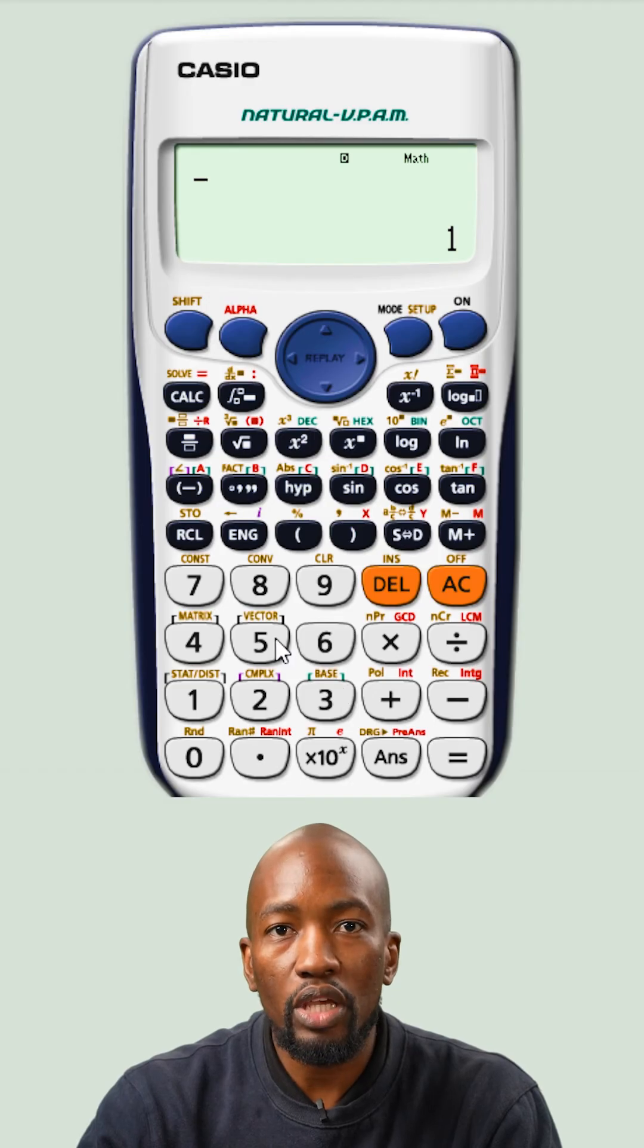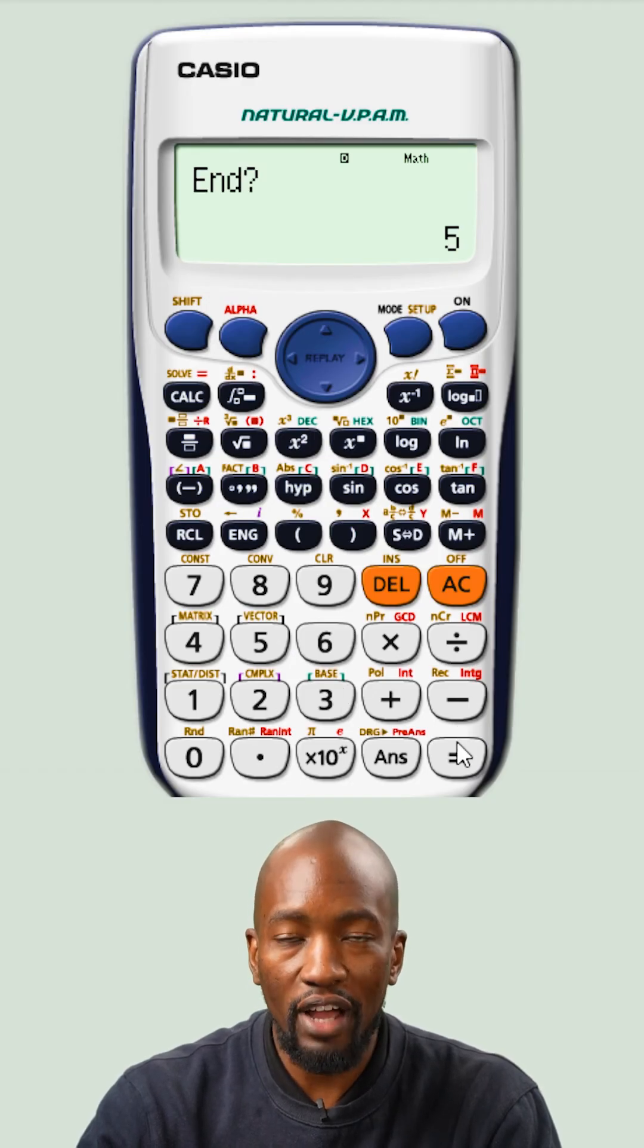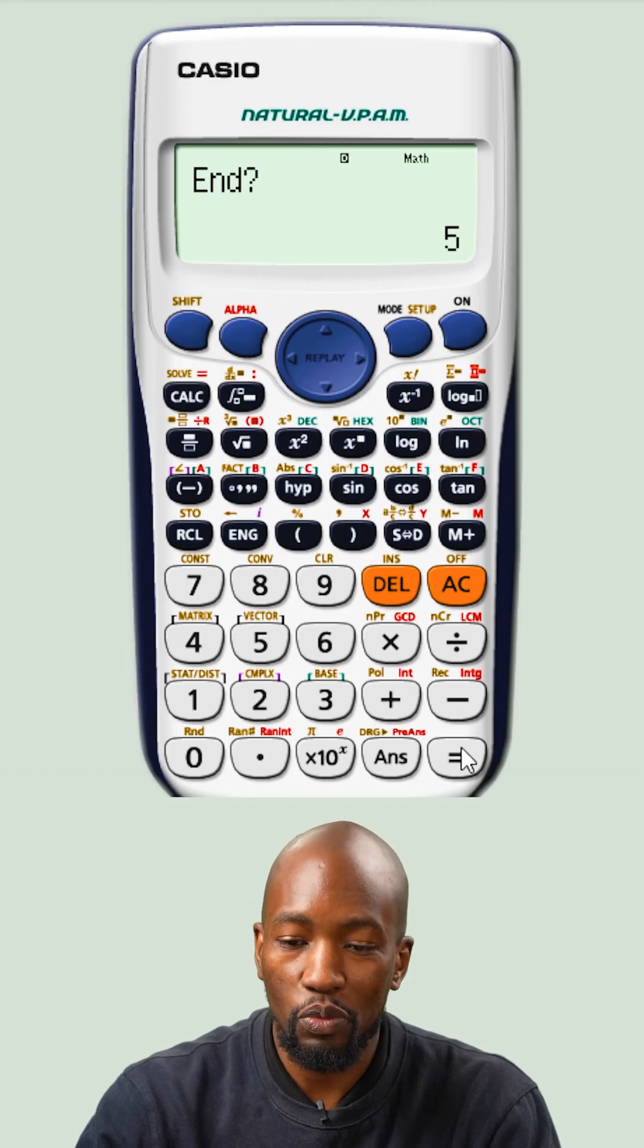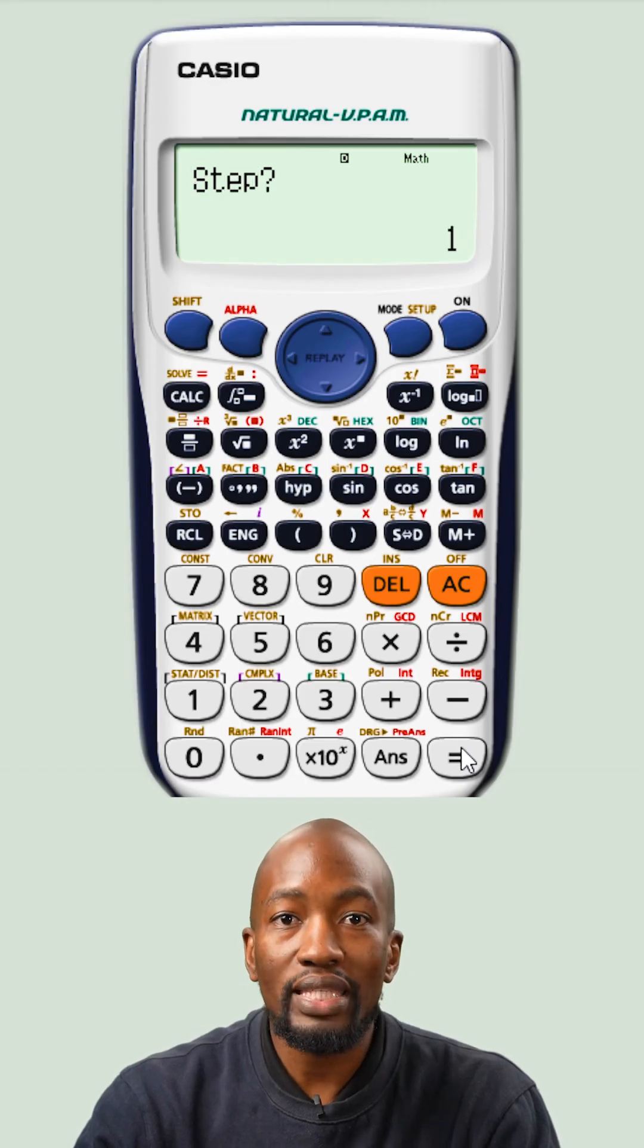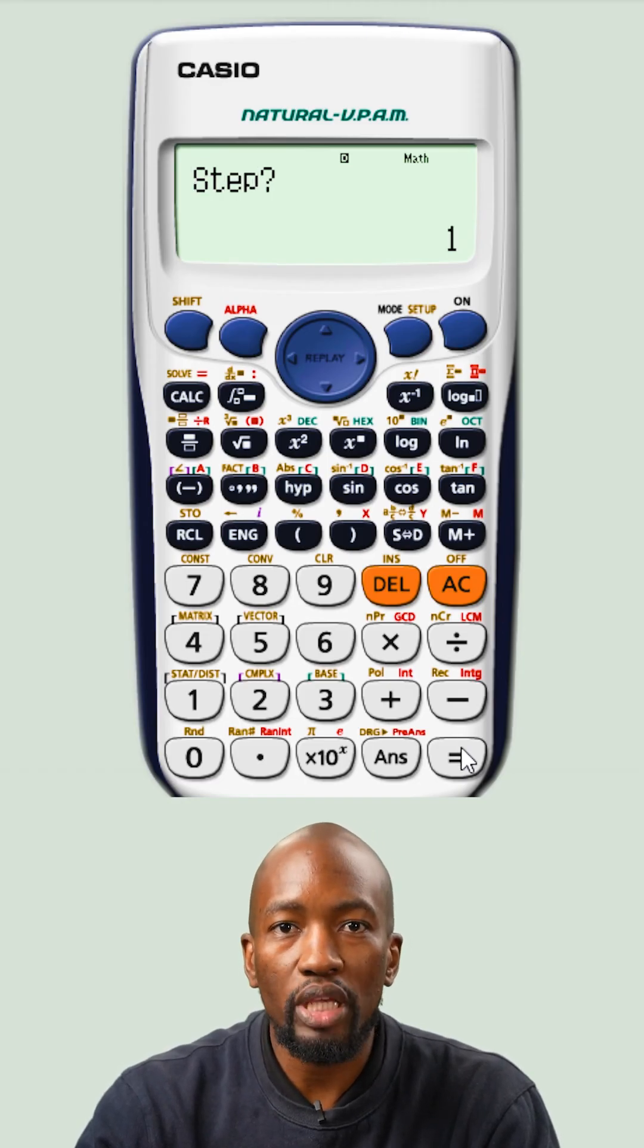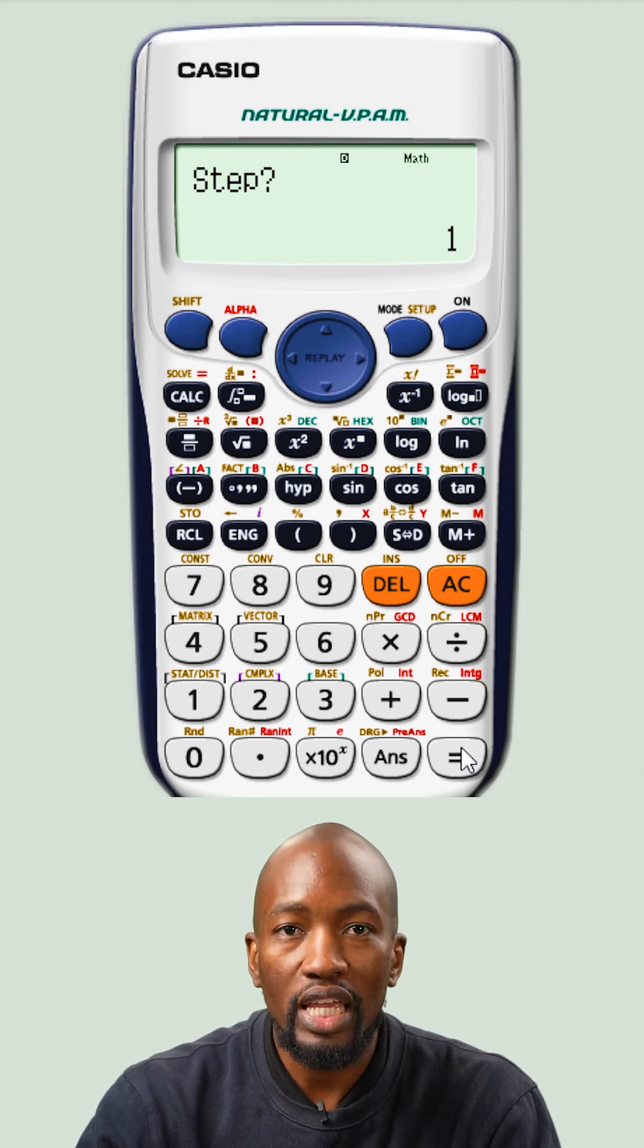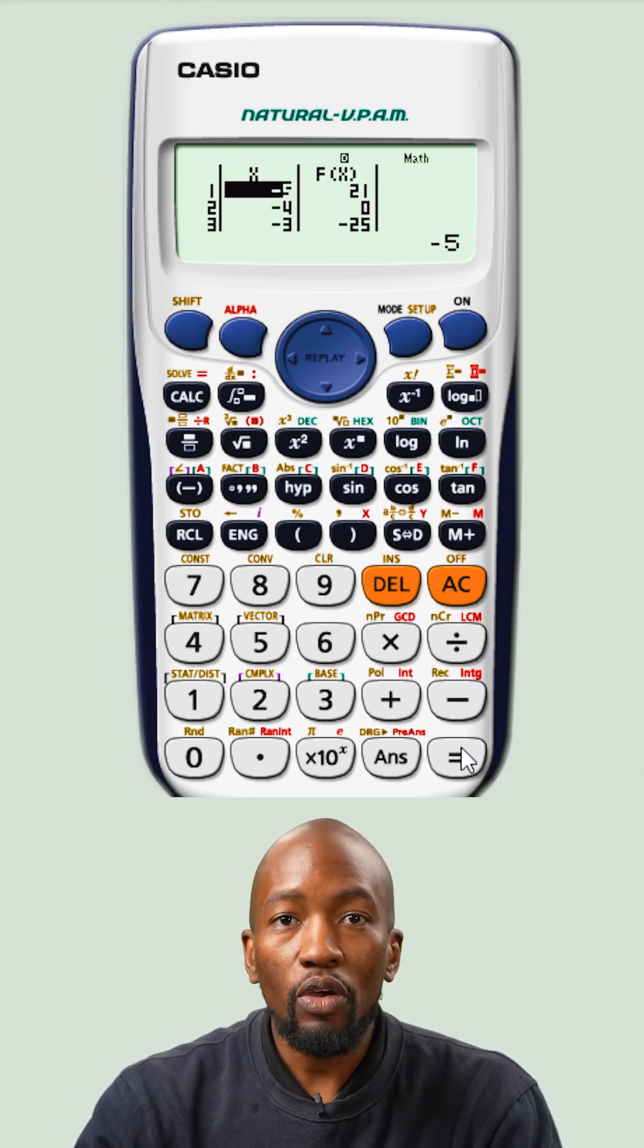Then you press equals. The end will say 5, then you just press equals. Now it'll ask you for step. Your step needs to be 1, then you just press equals.